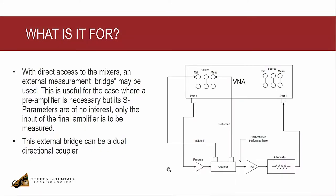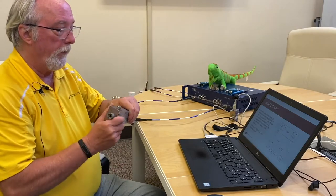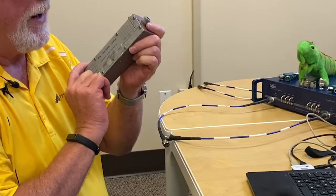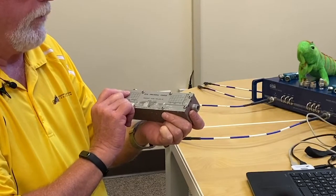So what's it for? Now that we've shown it, let's actually hook one up. With direct access to the mixers, we can put a bridge, and we're going to use this coupler. This is a bi-directional coupler, 1,900 to 4,000 megahertz. It's a 20 dB coupler.